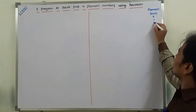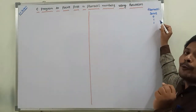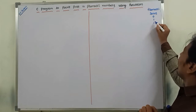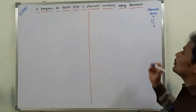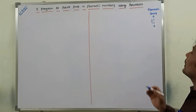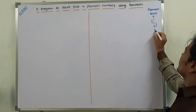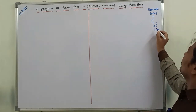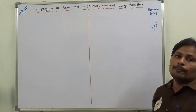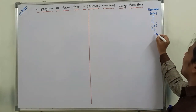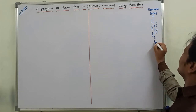So 0 plus 1 is 1. The next Fibonacci number is found by adding the result and the previous number: 1 plus 1 equals 2. Then 1 plus 2 equals 3, then 2 plus 3 equals 5, then 3 plus 5 equals 8, then 5 plus 8 equals 13.